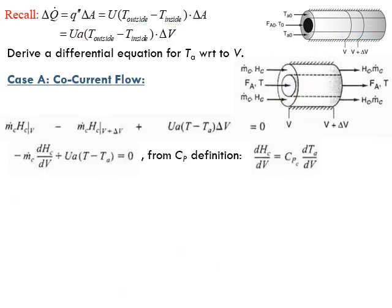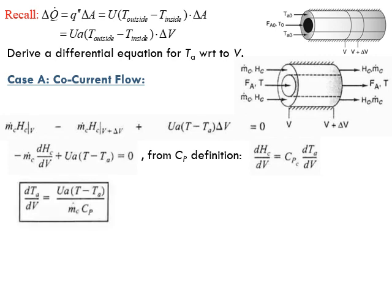We have derived this equation for the balance on the heat transfer fluid where the flow is co-current. Note that V here refers to the volume of the reactor. The initial condition for this equation is: at V = 0, Ta = Ta0.